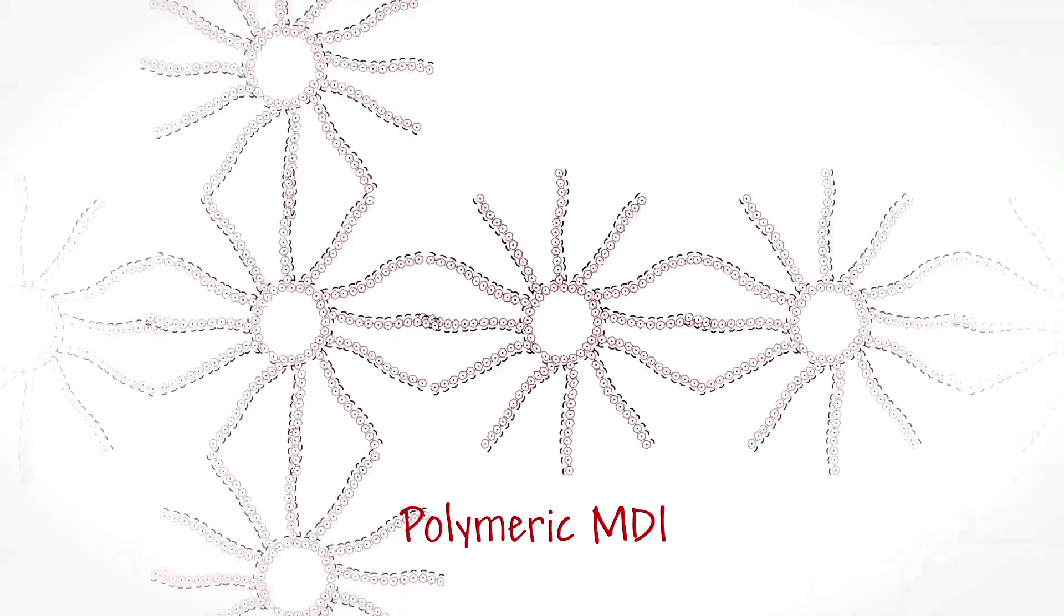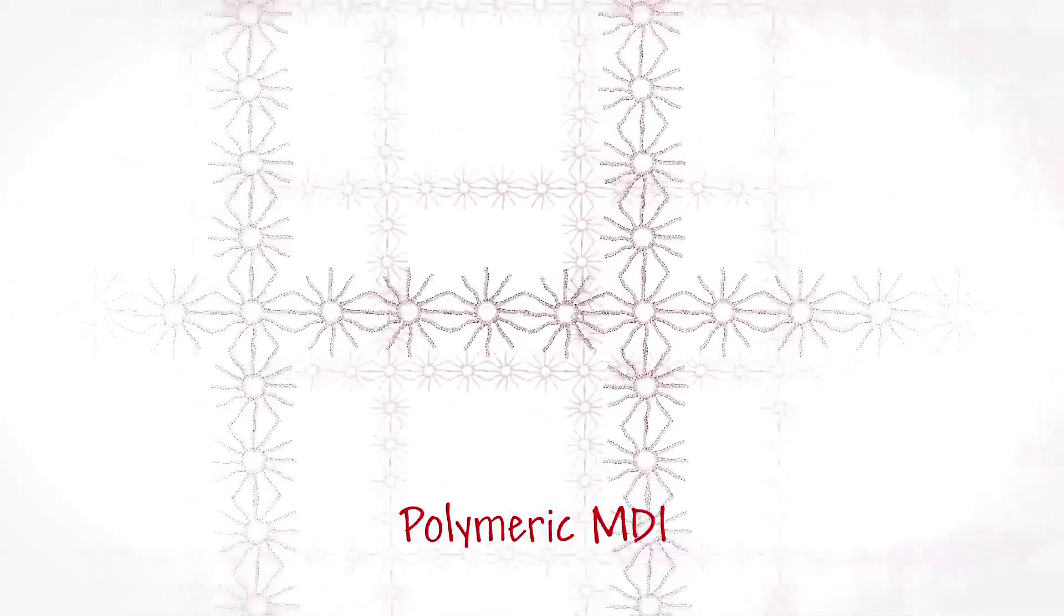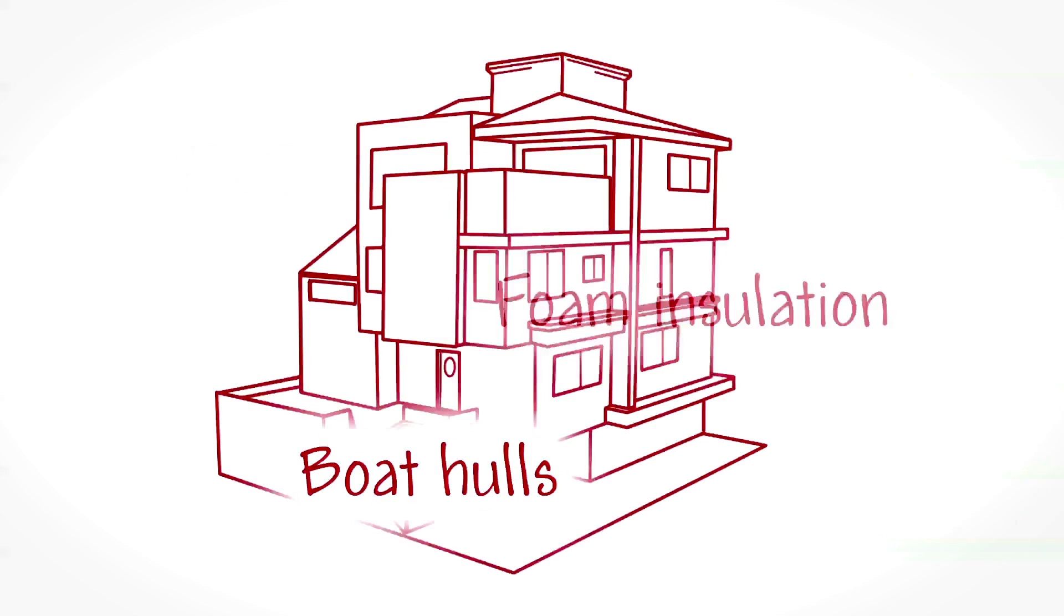Polymeric MDIs have many more places to plug into, which creates more of a structure. They're generally used to make, you guessed it, rigid products like picnic coolers, boat hulls, and foam insulation.